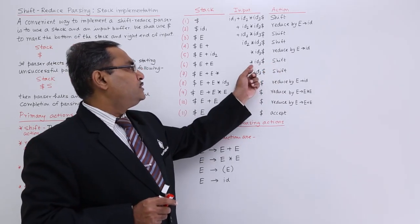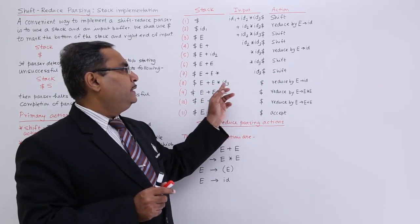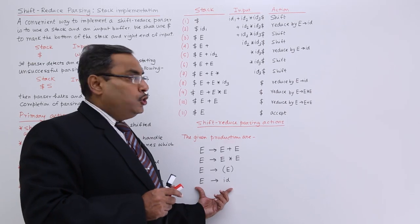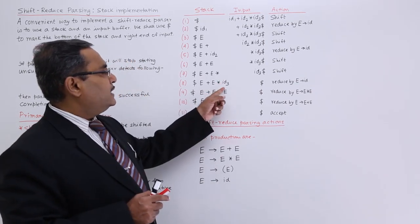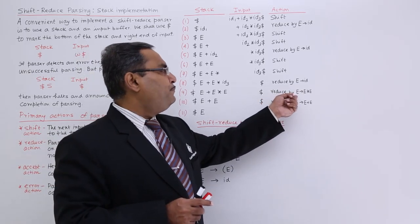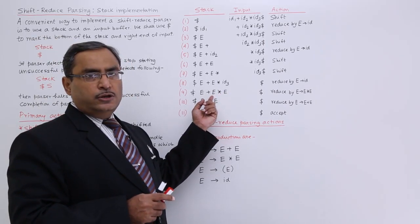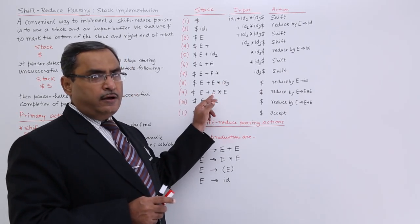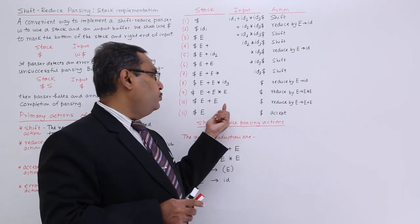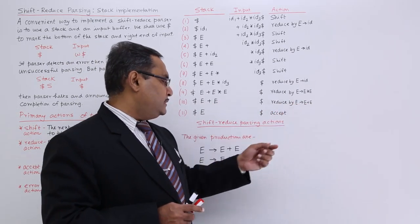The next action is shift, so star is shifted onto the stack, leaving ID3 dollar in the input. The next action is shift, so ID3 is shifted to the top of the stack — we now have a handle. This handle ID will be replaced by E: reduce by E produces ID. The next action is reduce by E produces E star E — production rule 2. We have E star E on the top of the stack; the handle E star E is popped and E is pushed because the left-hand grammar symbol is pushed after the handle is identified. This is the handle production, so it is reduced and E is pushed.